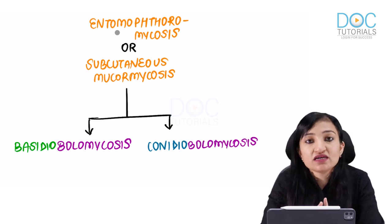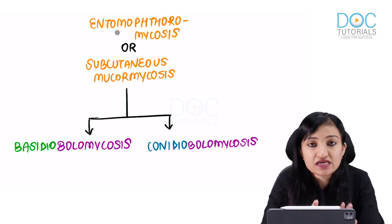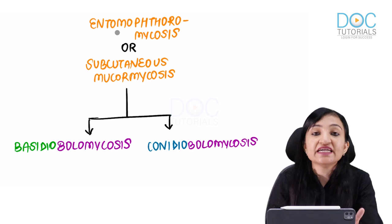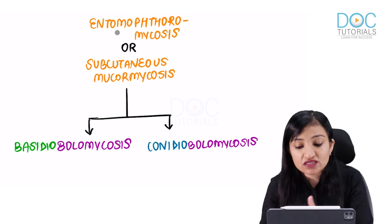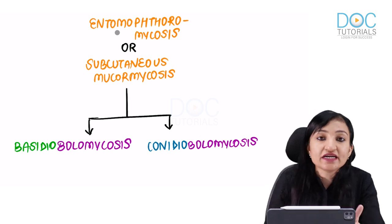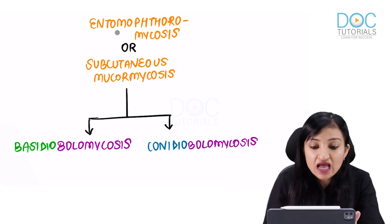Entomophthoromycosis or subcutaneous Mucoromycosis involves two important diseases — remember B and C: Basidiobolomycosis and Conidiobolomycosis.